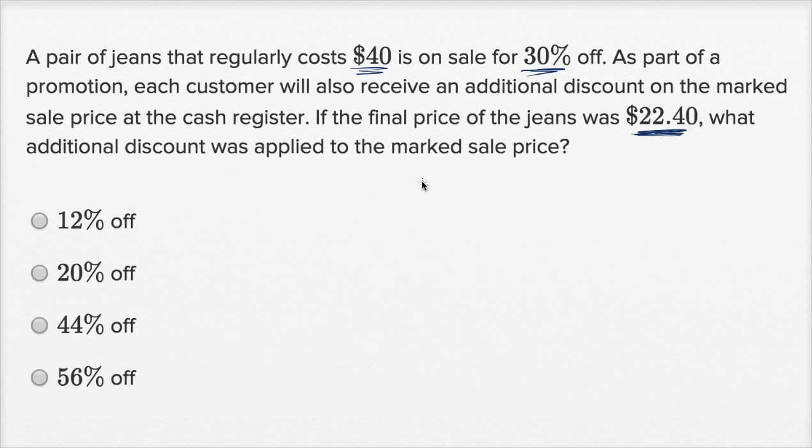All right, this is interesting and useful because we need to know what we're going to pay for our jeans. So the regular price is $40. We're going to assume everything is in dollars. It's on sale for 30% off. If you're 30% off, that means it's going to cost 70% of the regular price.